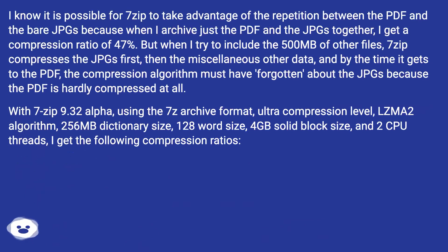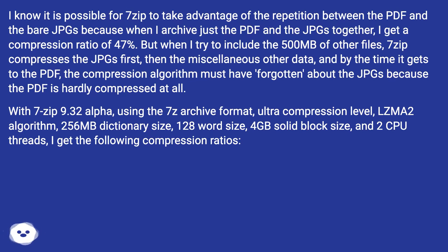I know it is possible for 7-zip to take advantage of the repetition between the PDF and the bare JPGs, because when I archive just the PDF and the JPGs together, I get a compression ratio of 47%. But when I try to include the 500 MB of other files, 7-zip compresses the JPGs first, then the miscellaneous other data.